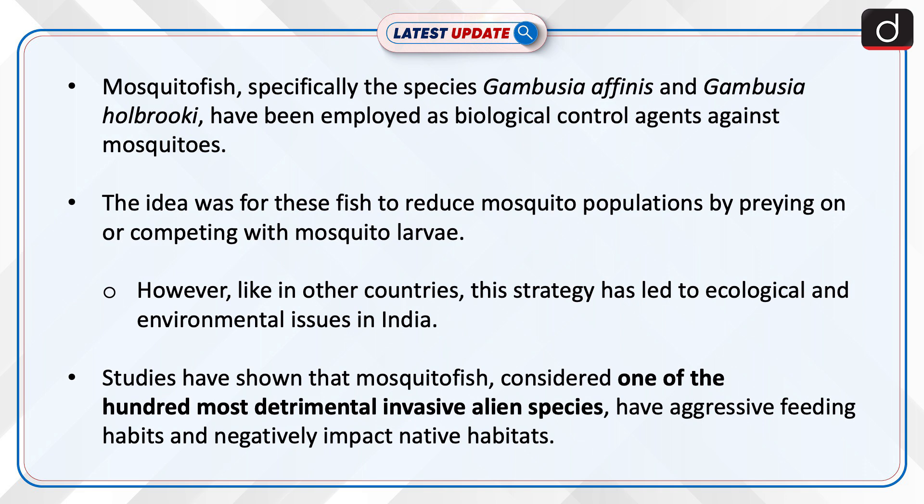However, like in other countries, this strategy has led to ecological and environmental issues in India. Studies have shown that mosquito fish, considered one of the 100 most detrimental invasive alien species, have aggressive feeding habits and negatively impact native habitats.